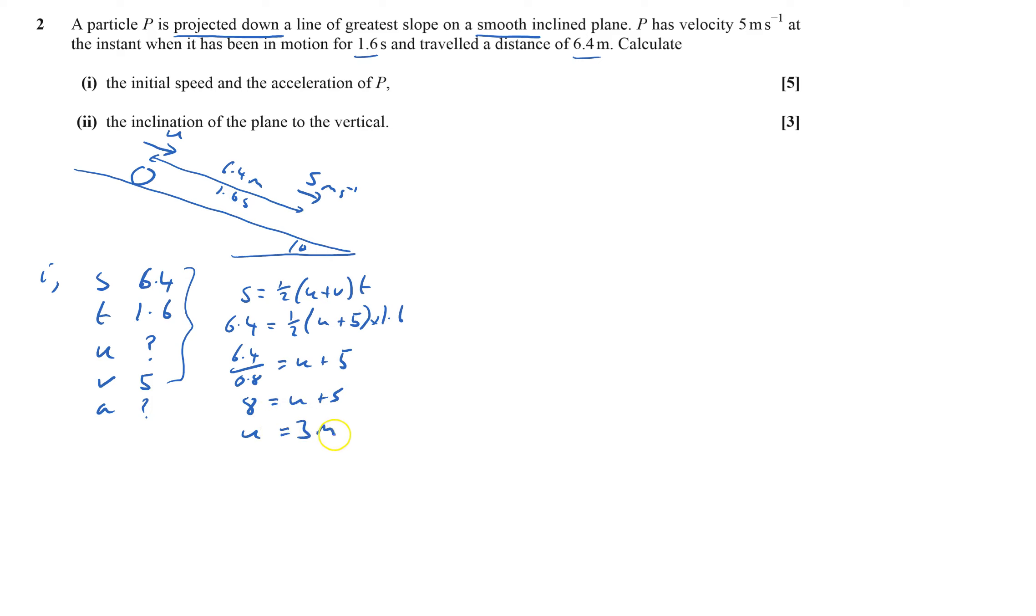Now I could find a. Do I try and use v equals u plus at again? I could use the one without u, s equals vt minus a half at squared, but v equals u plus at is easier.